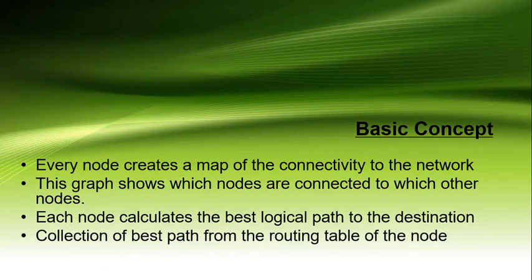The basic concept of Link State Routing: every node creates a map of the connectivity to the network. This graph shows which nodes are connected to which other nodes. Each node calculates the best logical path to the destination, and the collection of best paths forms the routing table of the node.